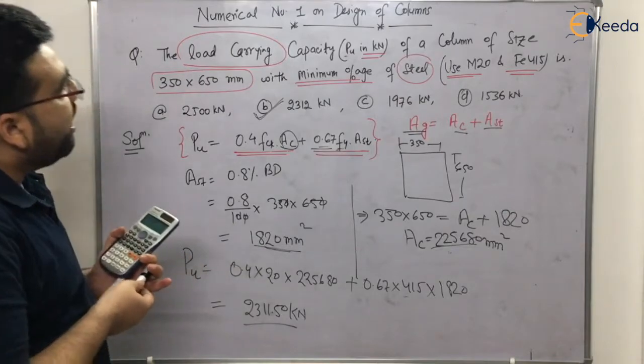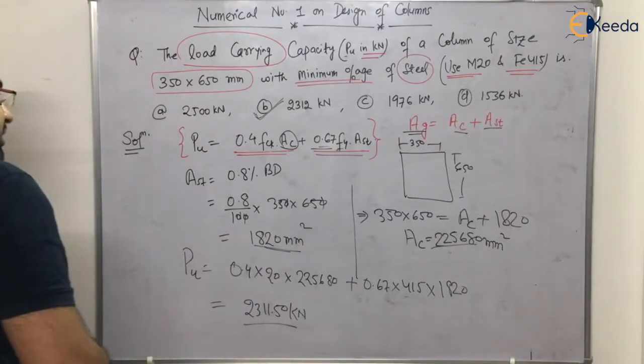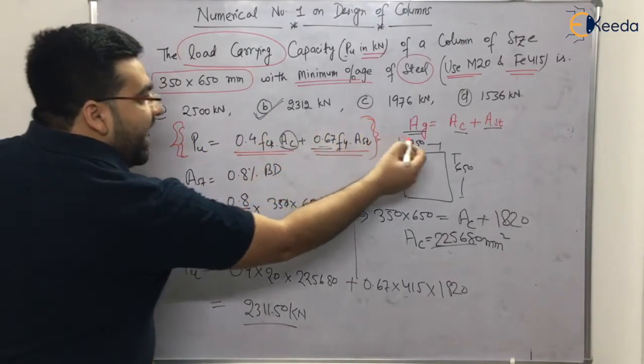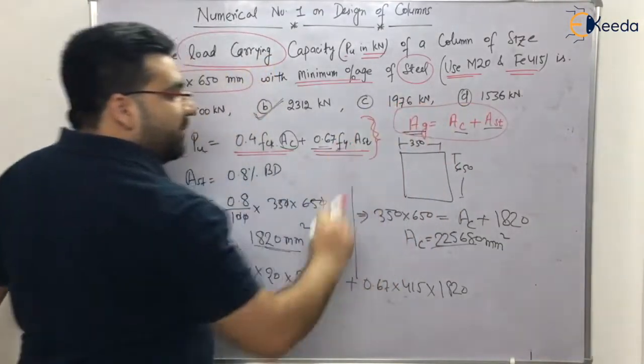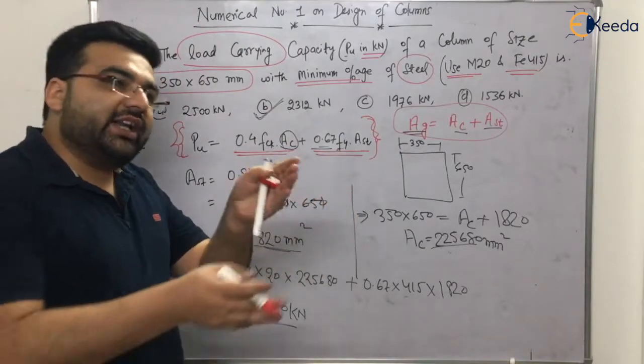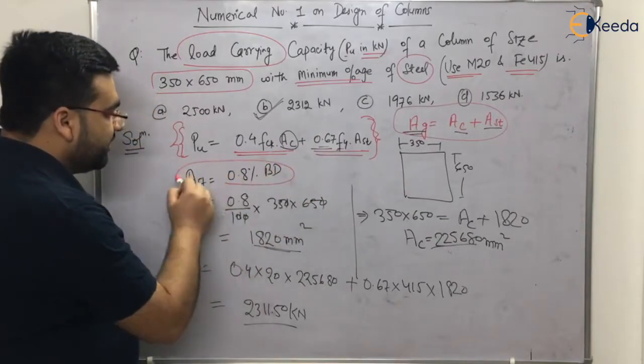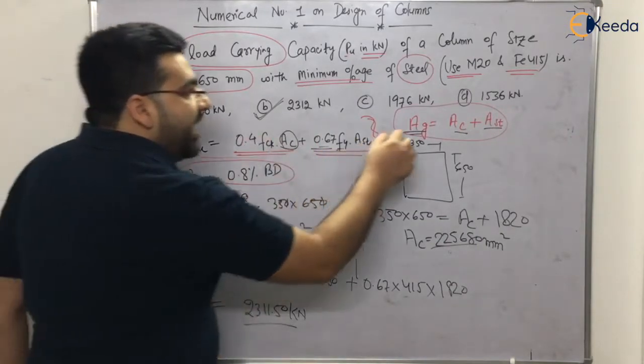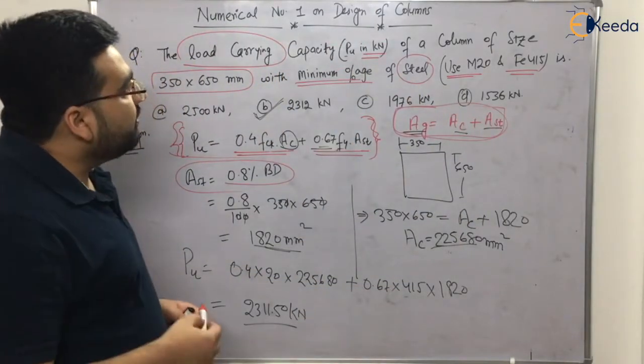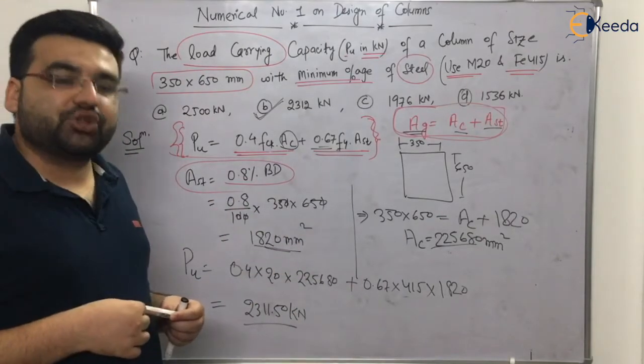So I hope that you have understood how to calculate this numerical. Why I chose this numerical is because I wanted to make you understand the use of IS 456 provisions. Whatever questions are asked in the GATE examination, they are not asking directly—it is related with the IS 456 provisions. This provision and this common sense was also used. I hope that you have understood the numerical. Now let us move forward to numerical number two. Thank you.